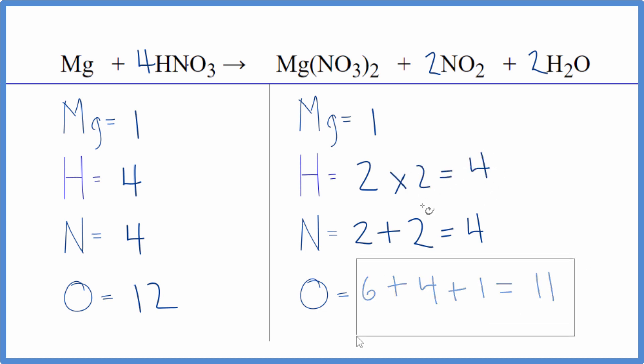Let's update the oxygens. So now I have two times three is six, plus two times two is four, plus one times two is two. 10 plus two gives us 12. We're done. This equation is balanced.